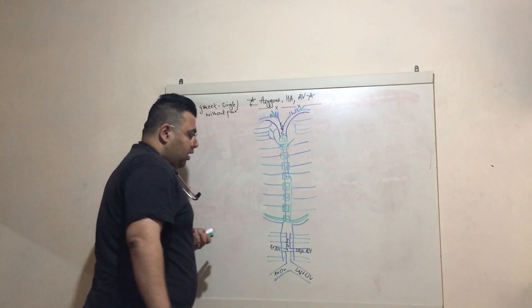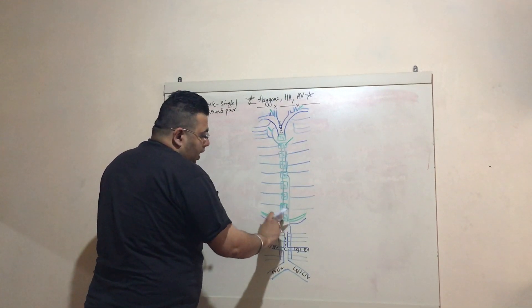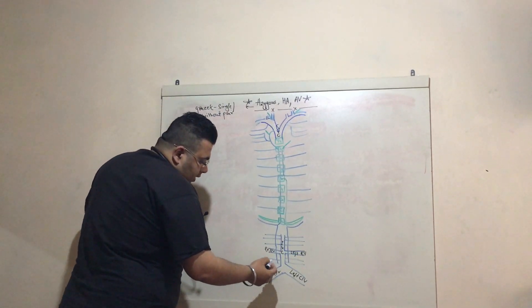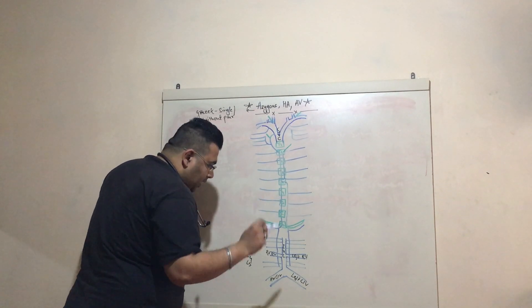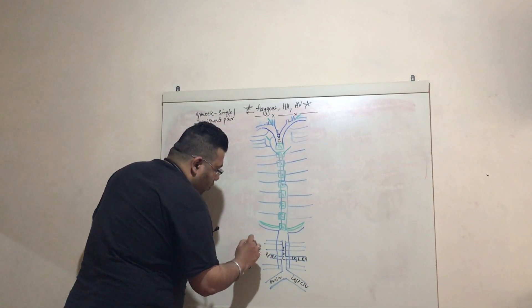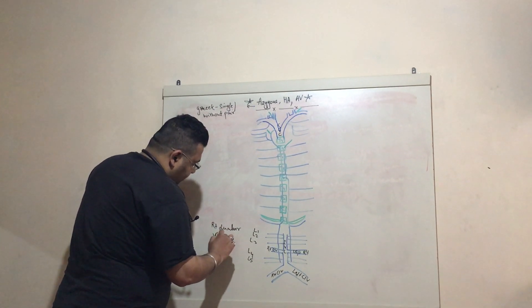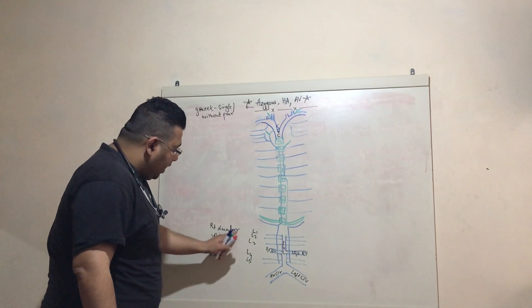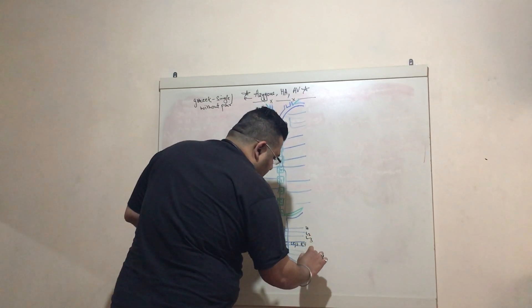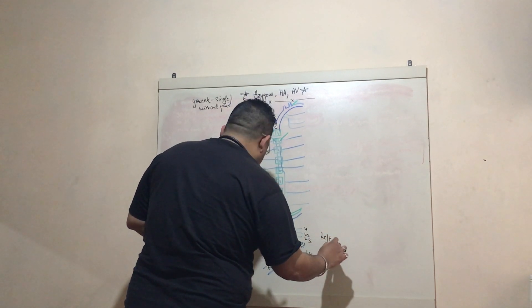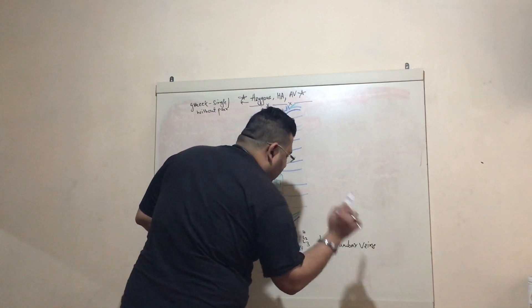Here I have drawn the vertebral bones from T4 to T12 — the thoracic ones. Below that are L5, L4, L3, L2, and L1, which are the right-sided lumbar veins. Similarly on the left side we also have L1, L2, L3, L4, L5 — these are the left-sided lumbar veins.